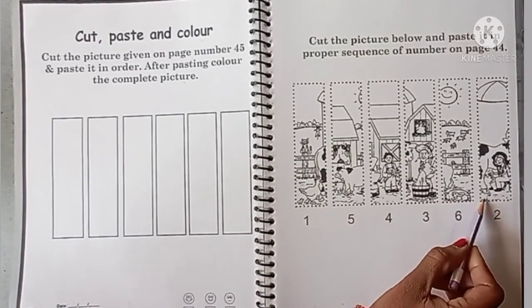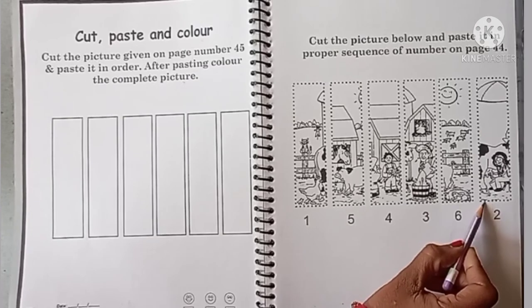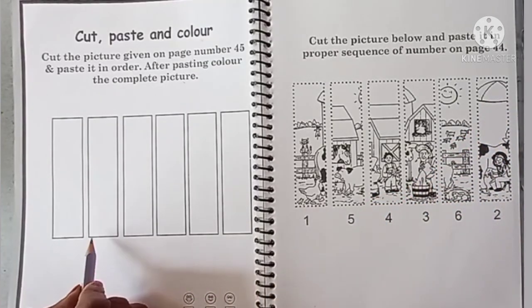Next is number 2. This picture cutout here, so you will remove this portion and fix it in the number 2 box.